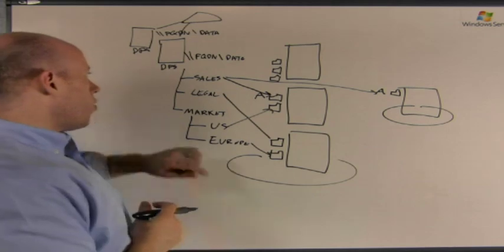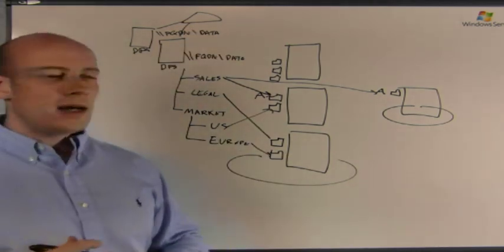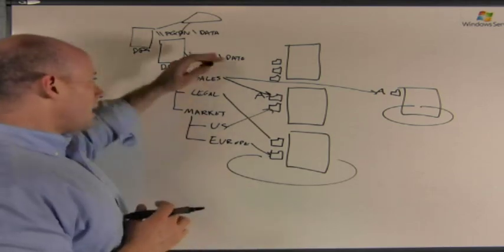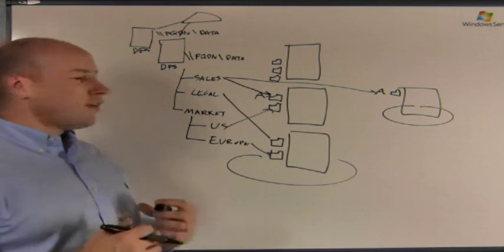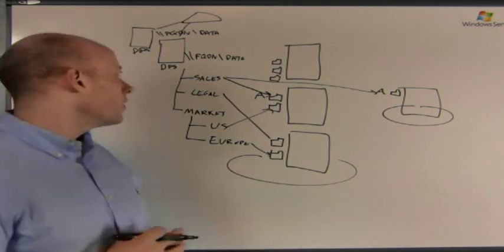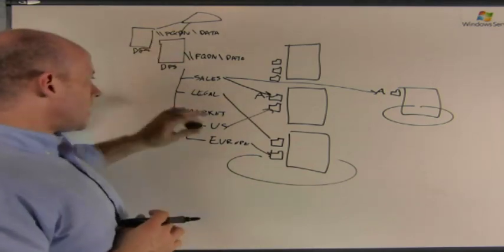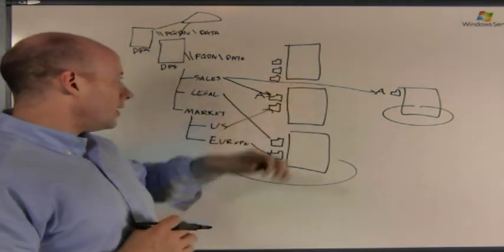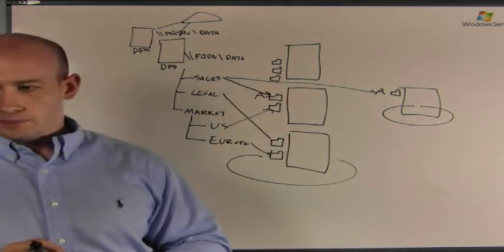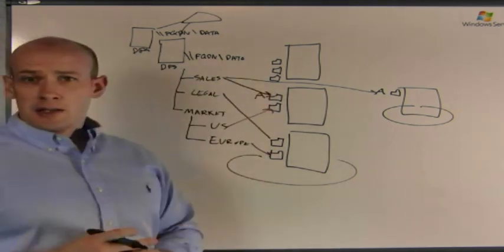So, basically, I'm now organizing all of my different file shares, all of my information, based on a logical design. How the data is more easily understood. So, now, if I'm a user, and I'm trying to find marketing data for the US, well, I just connect to the single namespace. I browse down and see marketing. I'm organizing it by US. And then it points me to actually where that data is.